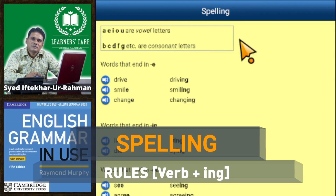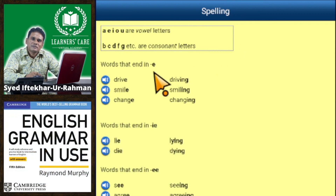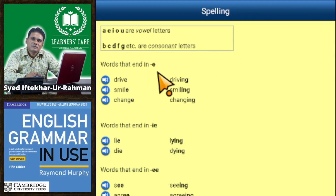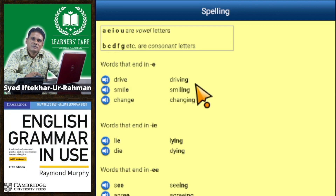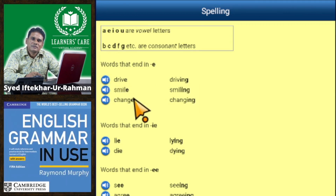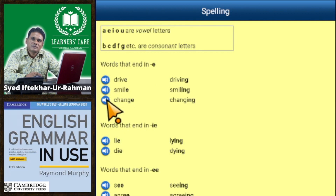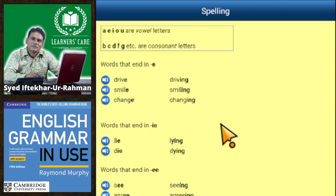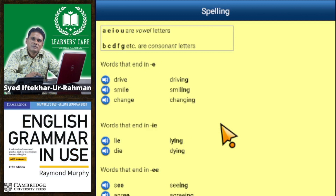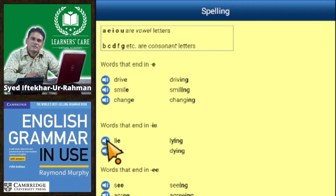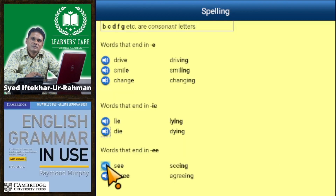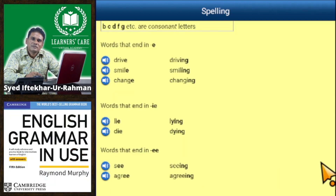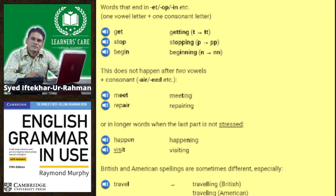Words that end in -e are replaced by -ing: drive → driving, smile → smiling, change → changing. Words that end in -ie are replaced by -y-ing: lie → lying, die → dying. Words ending in a vowel like -ee: see → seeing, agree → agreeing.